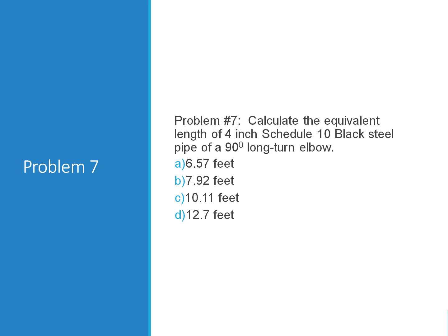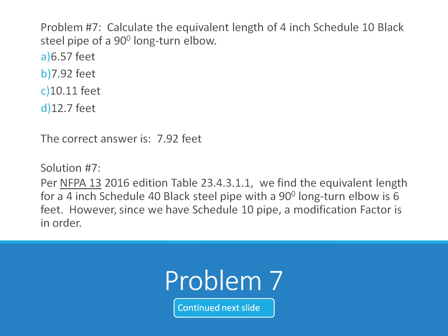Problem 7. What is the equivalent length of 4 inch Schedule 10 black steel pipe of a 90 degree long turn elbow? Is it A, 6.57 feet, B, 7.92 feet, C, 10.11 feet or D, 12.7? The correct answer for problem number 7 is 7.92 feet.